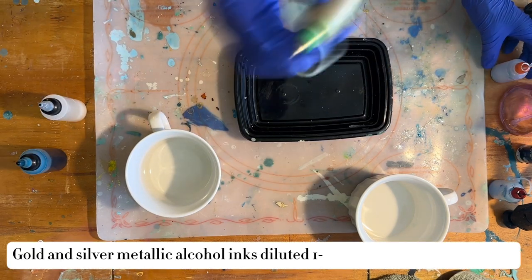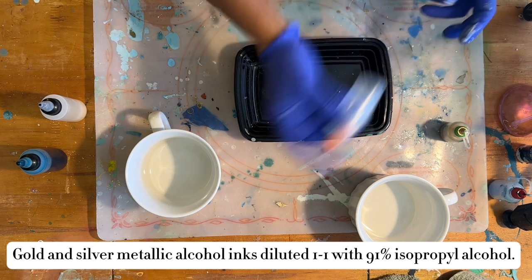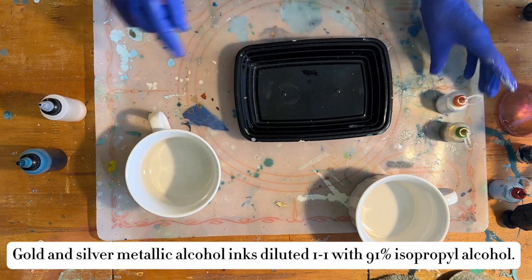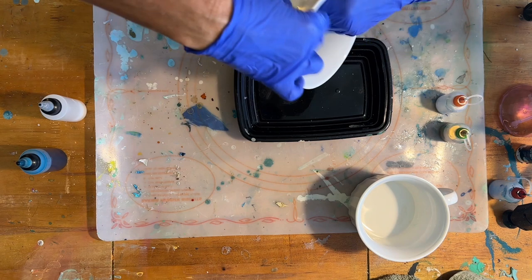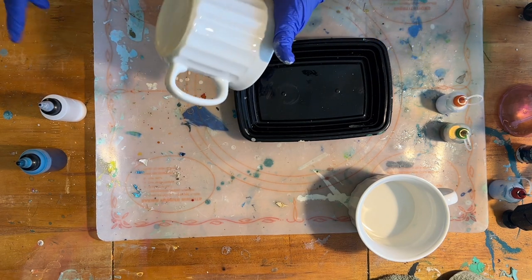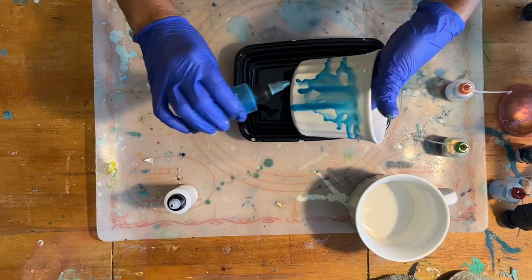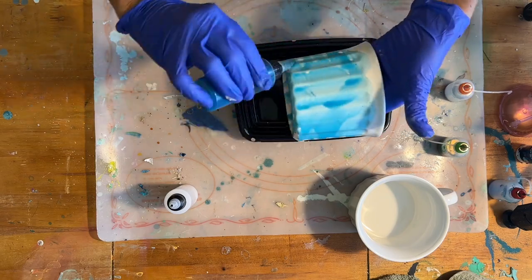I dilute my metallic alcohol inks one-to-one with 91% isopropyl alcohol. So one part alcohol ink to one part alcohol in a dropper bottle. I have cleaned my mugs and now I am going to get started.